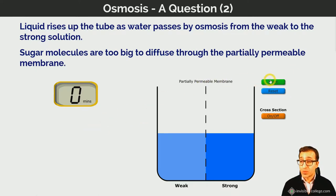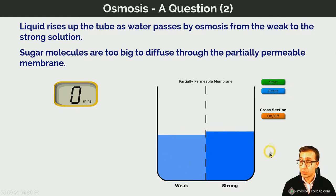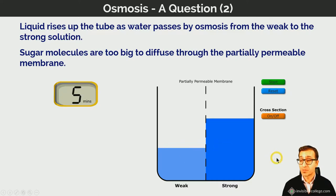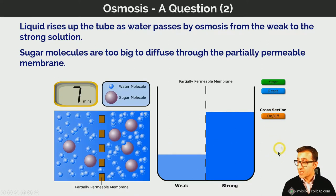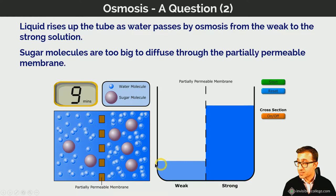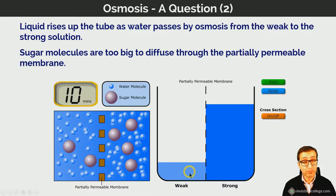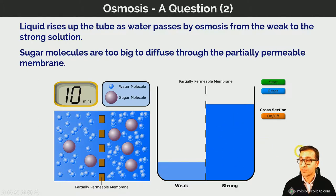If there is a flow of water from the more dilute to the more concentrated solution, we would observe the level rising on the concentrated side, because water is being moved by osmosis from where there are more water molecules per unit volume to the less dilute, more concentrated solution.